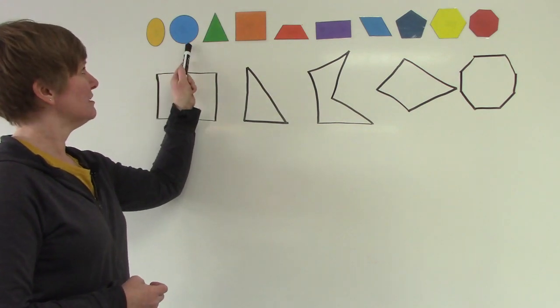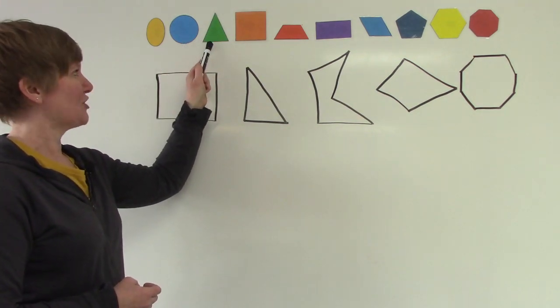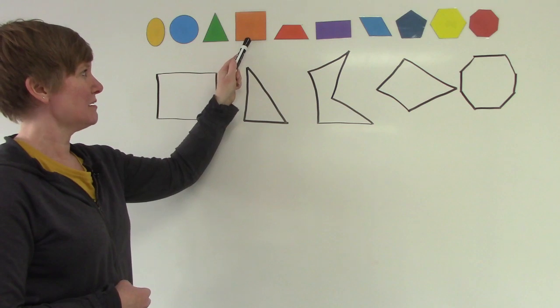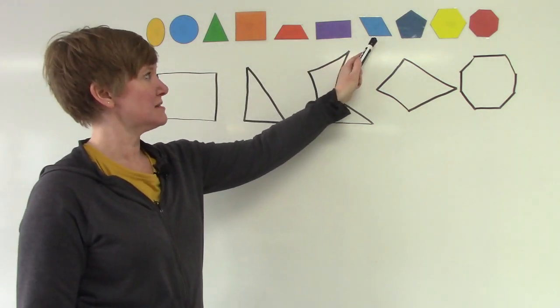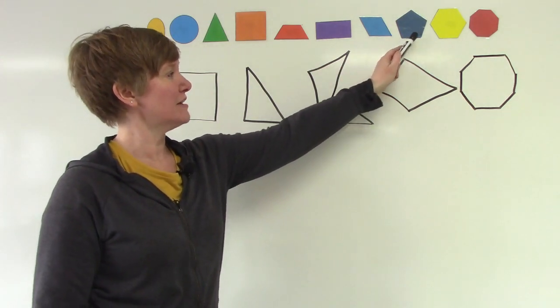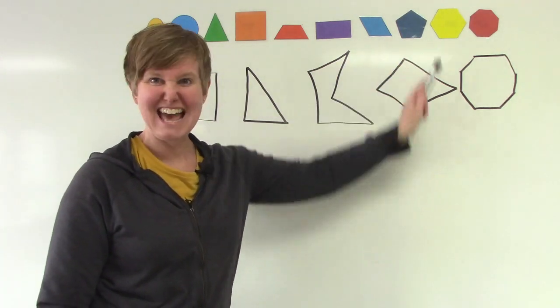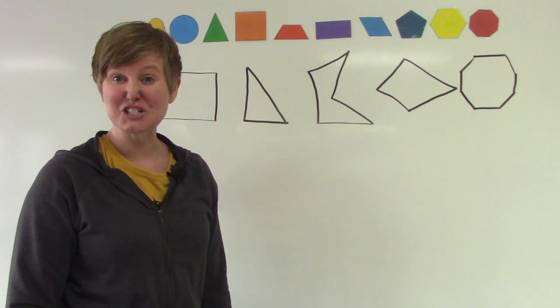Oval, circle, triangle, square, trapezoid, rectangle, rhombus, pentagon, hexagon, and at the very end is an octagon.